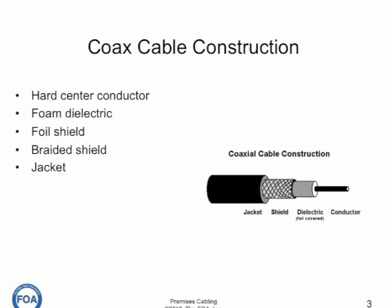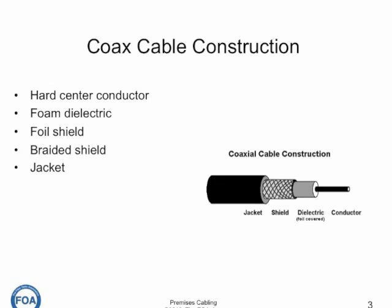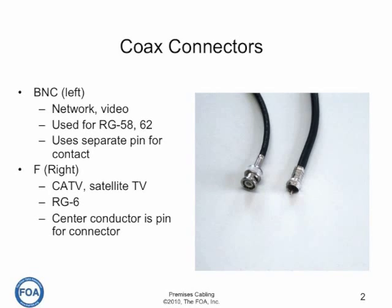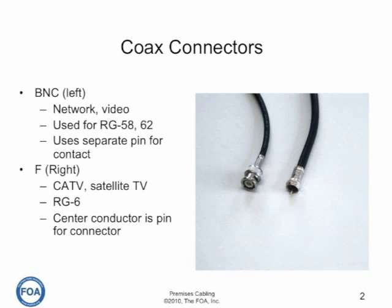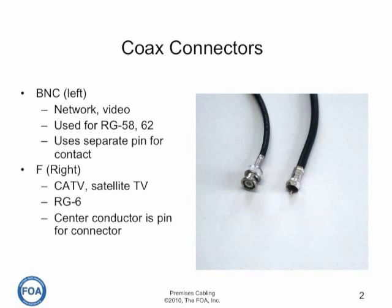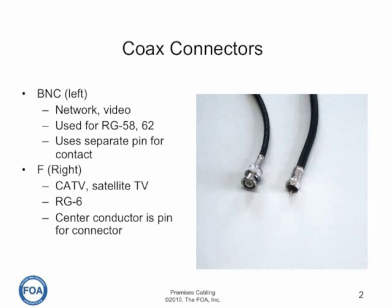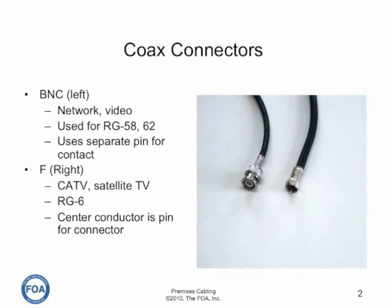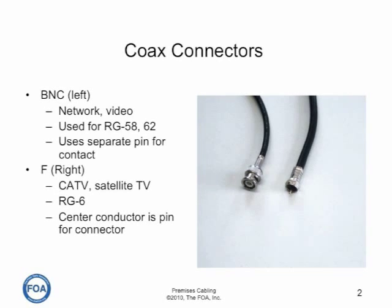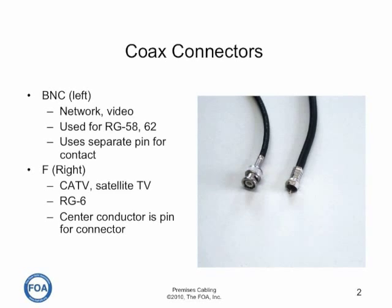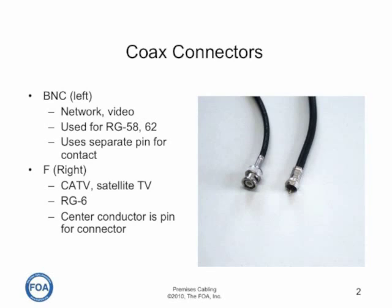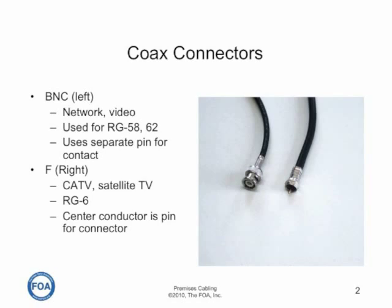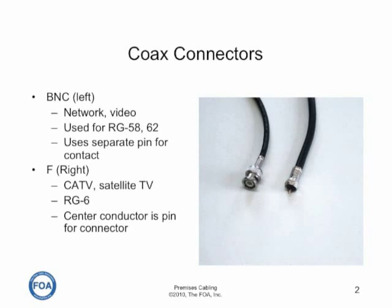The inner conductor is often stiff because it's used as a center pin — for example, in type F connectors. The two connectors most often used with coax are the BNC and the type F. The BNC is a bayonet lock connector, typically used for cables like RG58 and RG62. It uses a separate pin for contact because some of those cables have flexible center conductors. The F connector is designed for cable TV and satellite TV and uses RG6 cable, which has a solid center conductor that becomes the pin for the connector, simplifying termination.